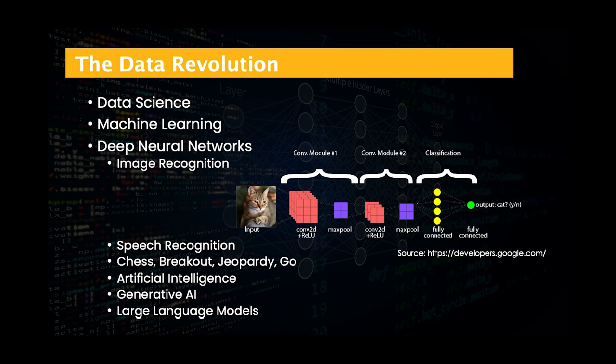Over the last decade, computers have learned to beat humans at chess, Go, Jeopardy, and video games, and are able to recognize images and speech with high precision. Recently, generative AI and large language models are producing results that can mimic human intelligence, such as text, audio, images, and video, that are hard to distinguish from human creativity.